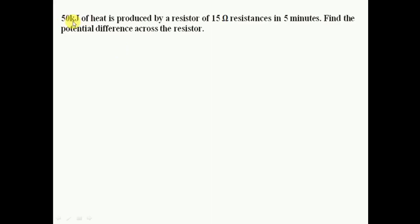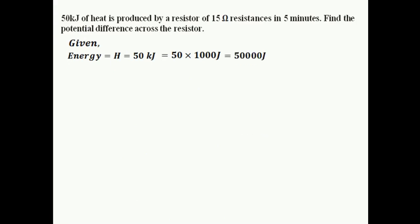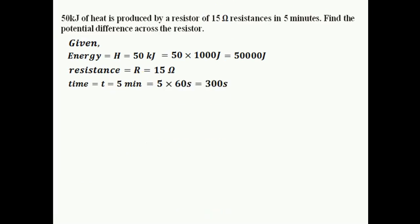This is the first question: 50 kilojoules of heat is produced by a resistor of 15 ohm resistance in five minutes — find the potential difference across the resistor. The units of energy and time are not in SI units, so they need to be converted. Energy H is 50 kilojoules, which equals 50,000 Joules. Resistance is 15 ohms. Time is 5 minutes, converted to 5 times 60, which is 300 seconds.